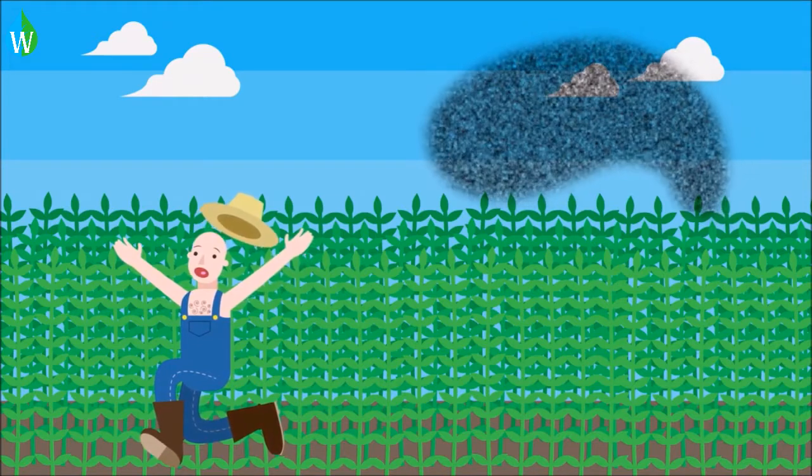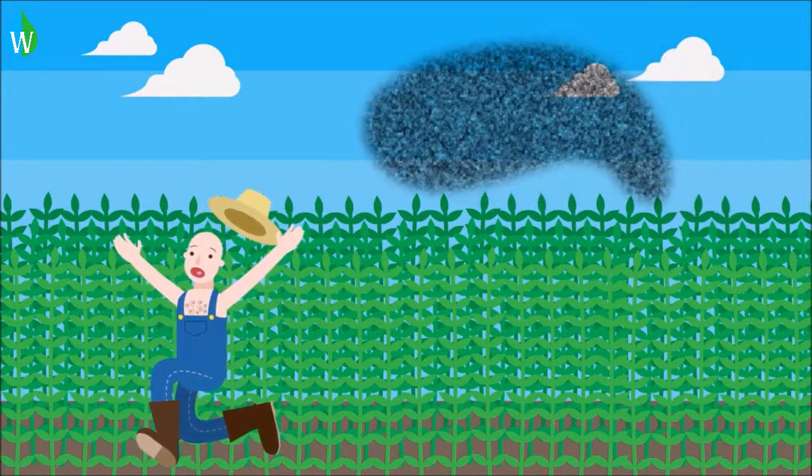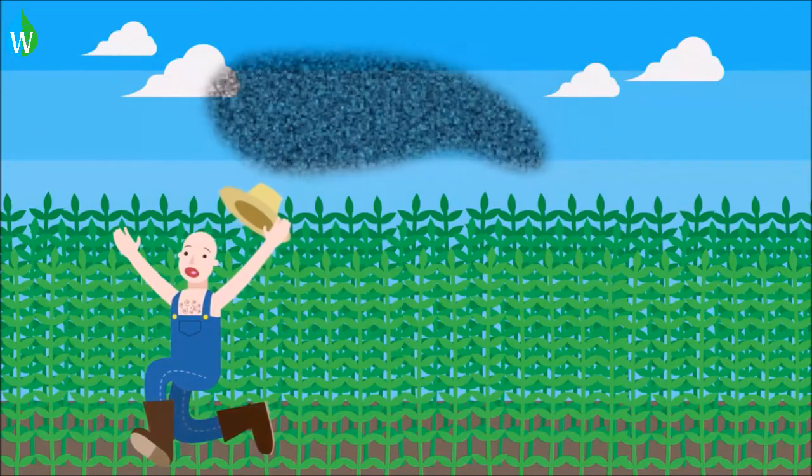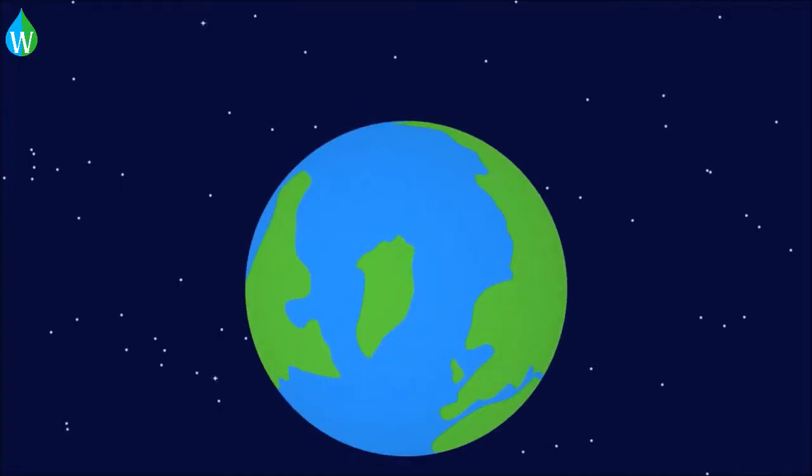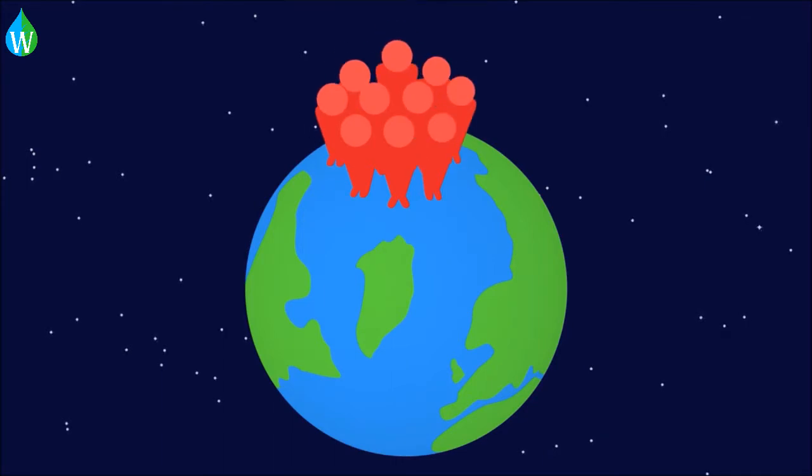Organic farming isn't all good. The yields are lower because more produce is damaged by pests and carefully selected chemical pesticides cannot be used. With an ever-growing world population, we have limited land to feed everyone from.